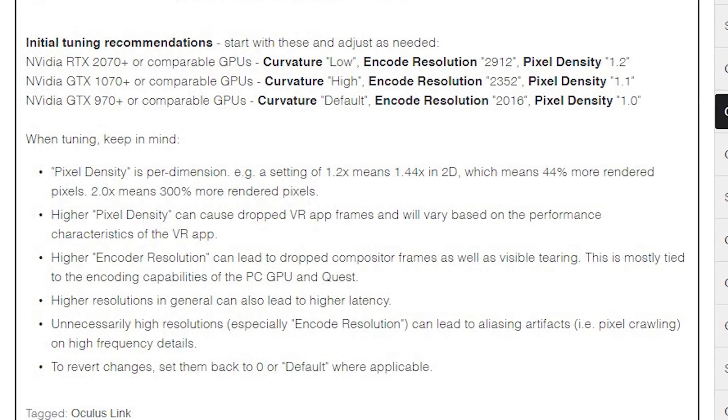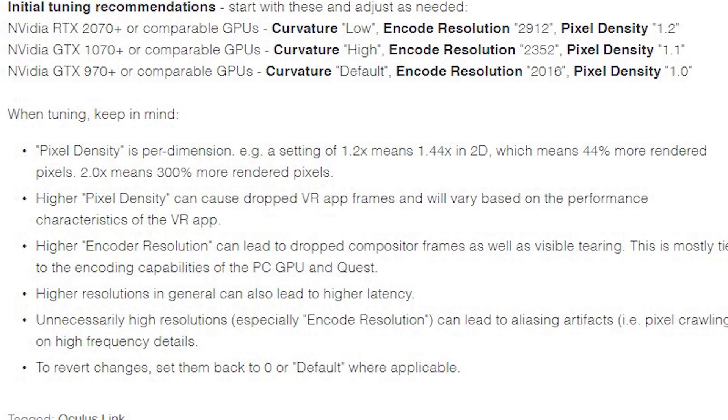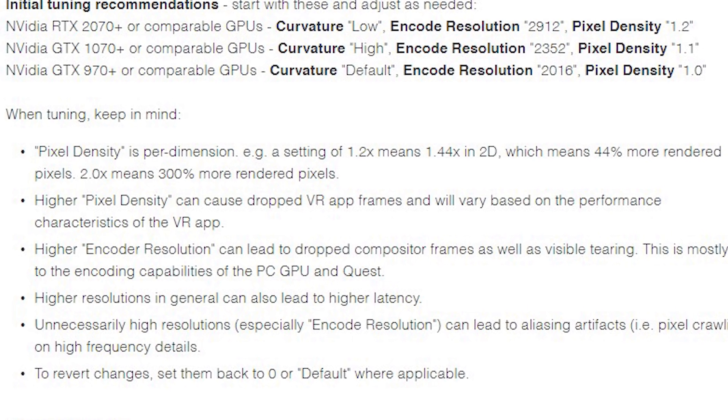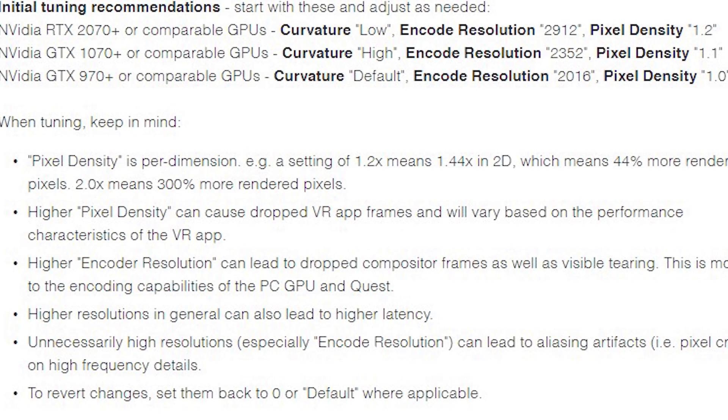Bear in mind that the pixel density value is per dimension, not the same as the super sampling you usually see. So a value of 1.2 means a 44% increase in pixel resolution, while a 2.0 means a 300% increase in pixels. If you don't have a very powerful graphics card, that's going to create problems.